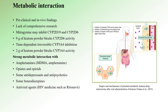Furthermore, mitragynine's main active metabolite, 7-hydroxymitragynine, appears to act as an irreversible time-dependent inhibitor of CYP3A4, an enzyme responsible for metabolizing approximately 40% of all clinically used substances. This leads to complete inactivation of CYP3A4 by altering its structure. Lower doses of Kratom tend to block intestinal CYP3A4 enzymes, potentially increasing the bioavailability of some compounds, while higher doses are responsible for hepatic CYP2D6 and CYP3A4 inhibition.